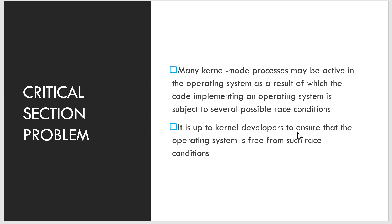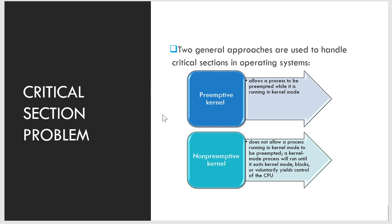It is up to kernel developers to ensure the operating system is free from such race conditions. There are two general approaches to handle critical sections in the OS: pre-emptive and non-pre-emptive kernels. A pre-emptive kernel allows a process to be pre-empted while running in kernel mode. A non-pre-emptive kernel does not allow a process running in kernel mode to be pre-empted; it will run until it exits kernel mode, blocks, or voluntarily yields control of the CPU.